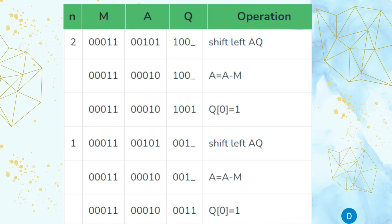We decrement N again; now N equals 1. We perform the shift left operation and write dash in the LSB of Q. After performing A = A − M, the MSB of A is 0. Hence Q0 (LSB of Q) is set to 1. Since decrementing N now gives 0, we stop. The quotient is 0011 and the remainder is 0010. We have successfully completed Example 1.